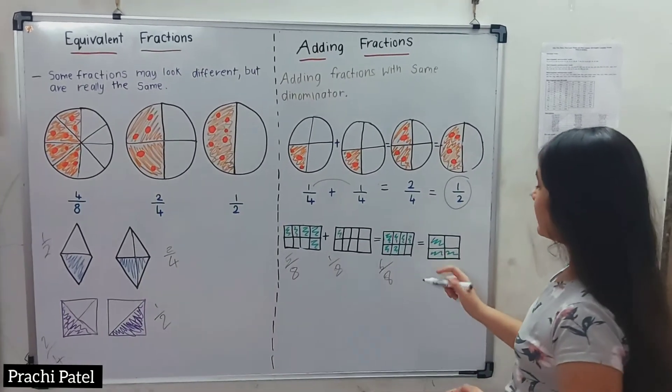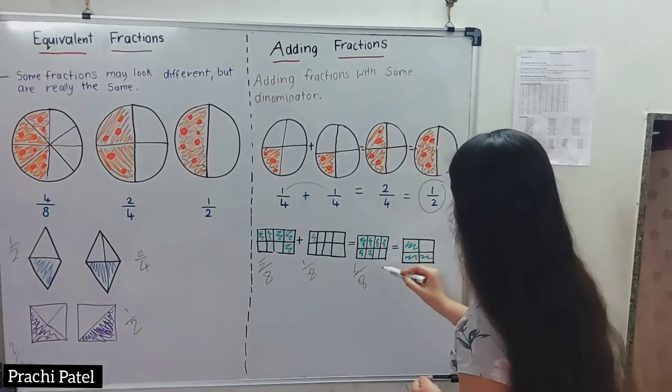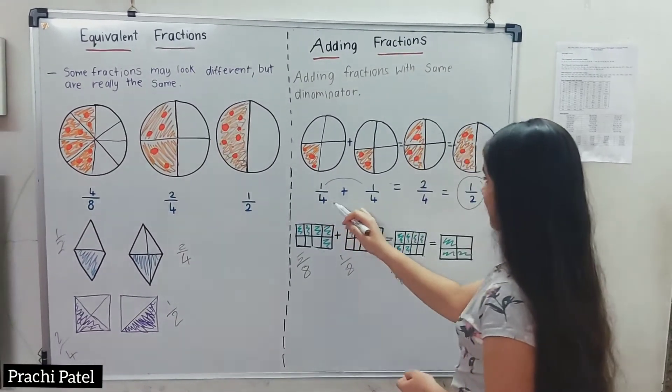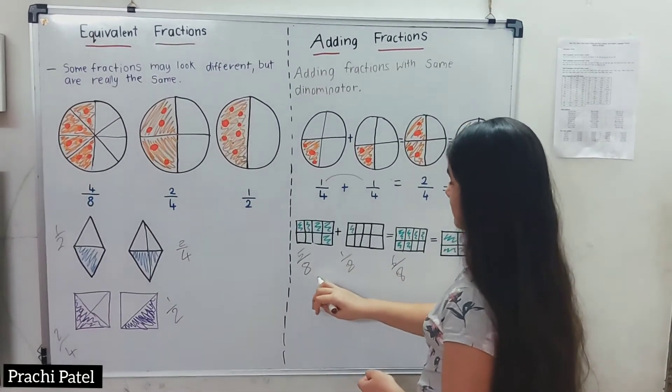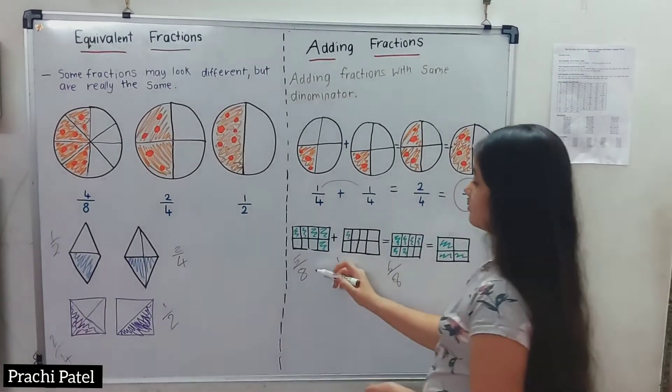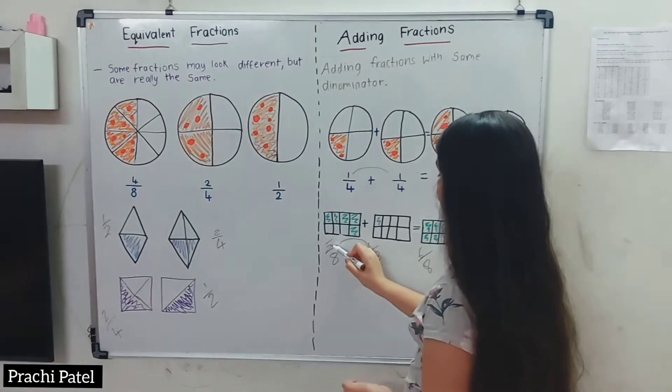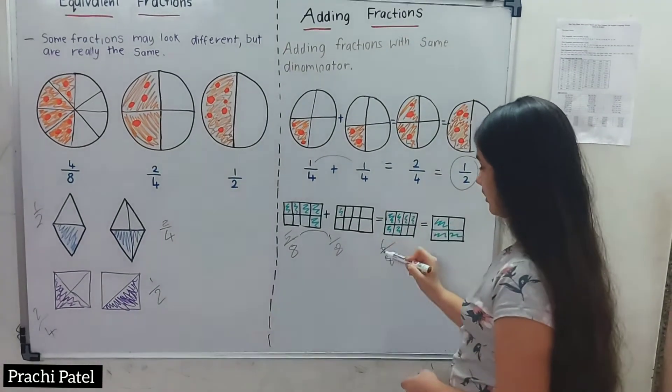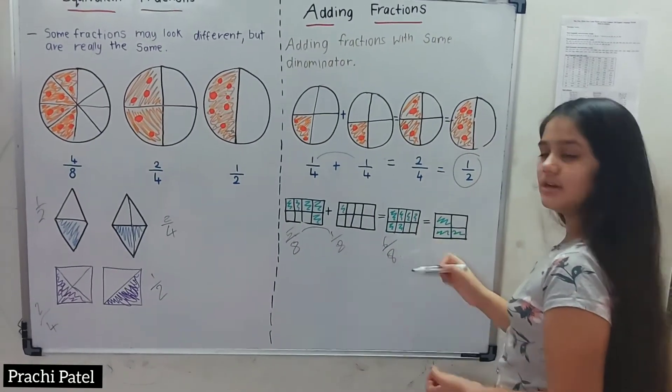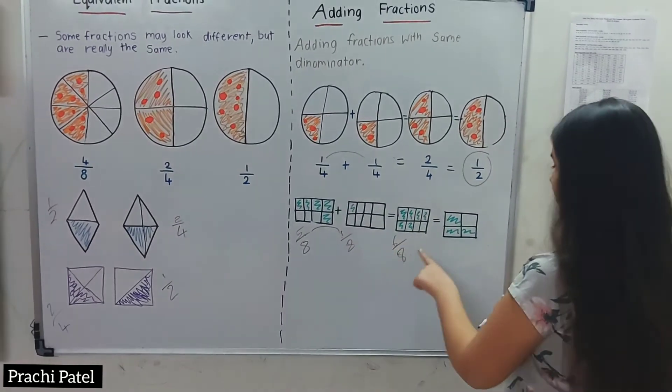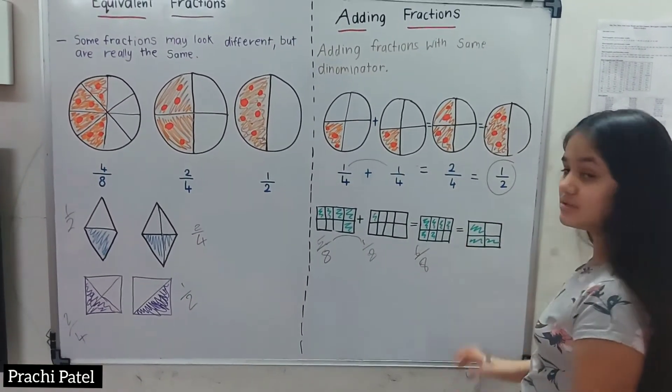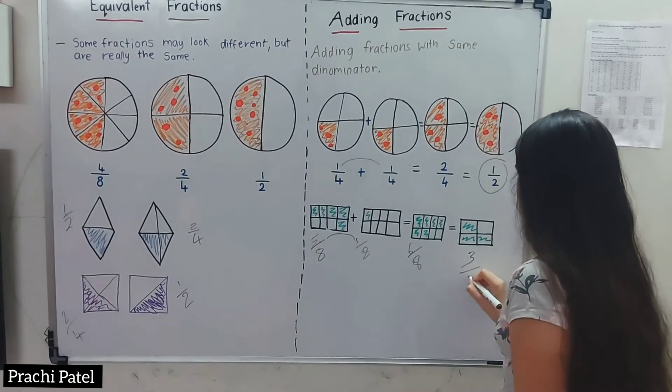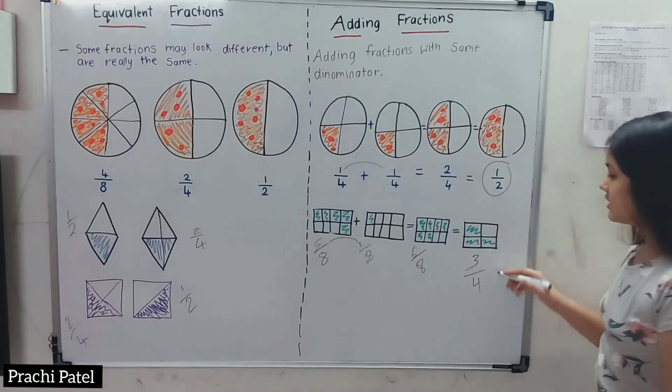We have the same denominators, so we add 5 plus 1 to get 6. The denominator stays the same, so we get 6/8. We need to simplify it. Half of 6 is 3 and half of 8 is 4, so the answer is 3/4.